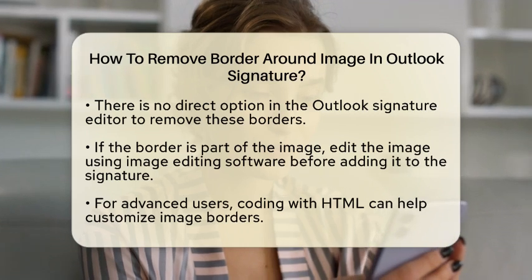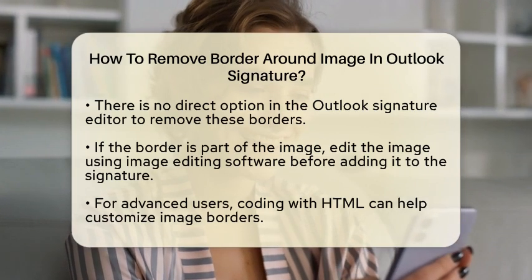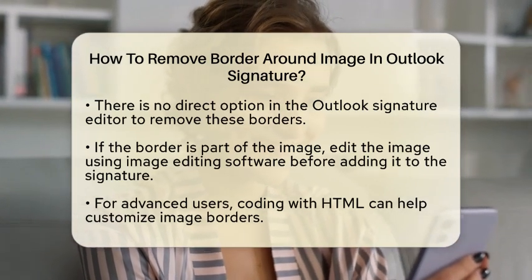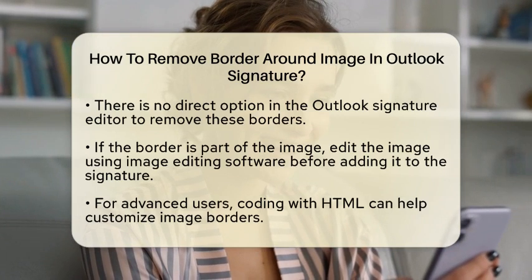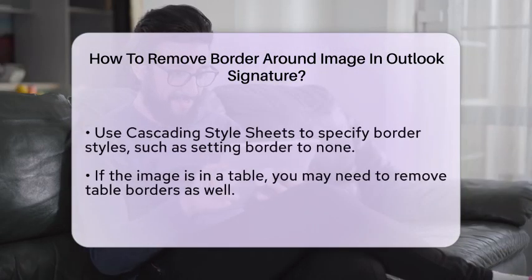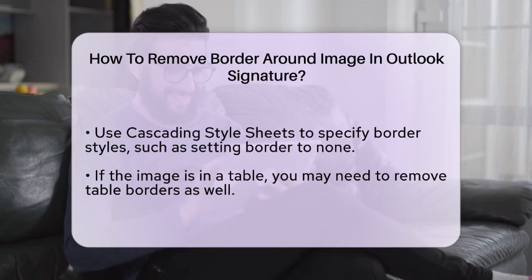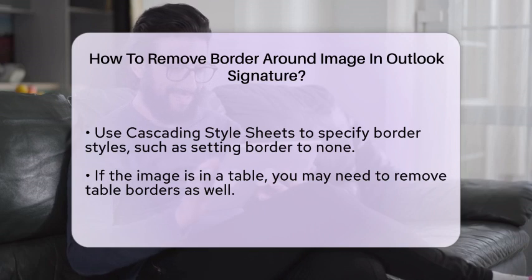For those who are comfortable with a bit of coding, using HTML can be a great option for advanced customization. You can specify border styles and widths for images using CSS. For example, you can set the border to none by using the style attribute in the code, like this: img src="image.jpg" style="border: none". This method gives you more control over how your images appear.